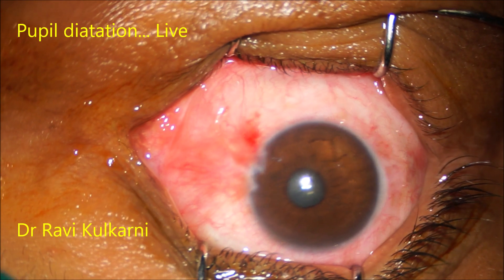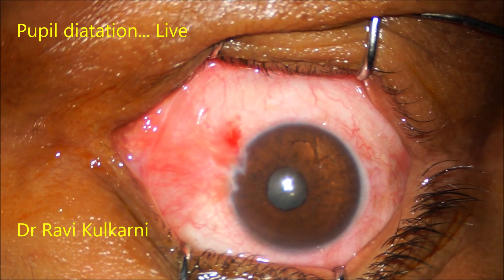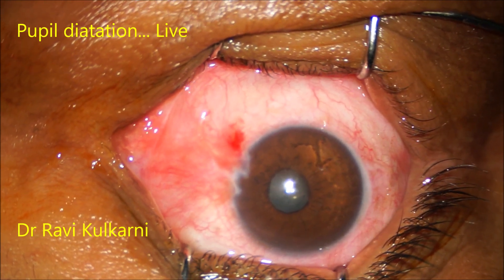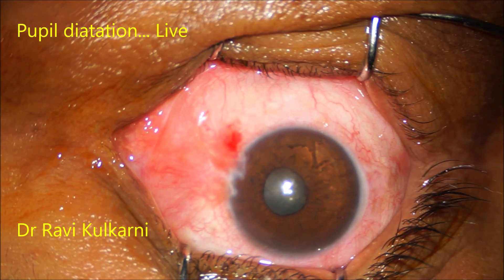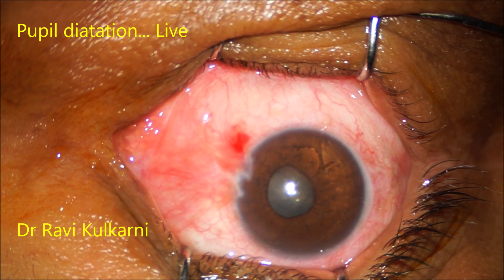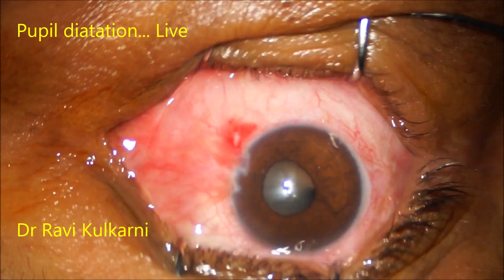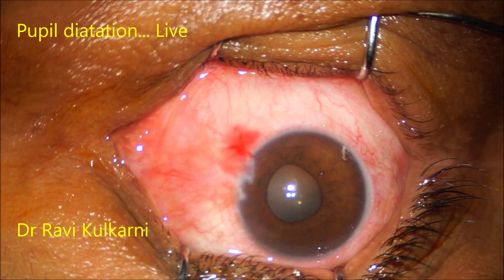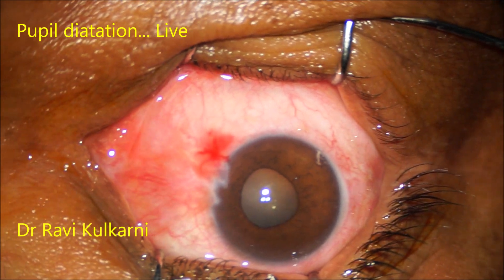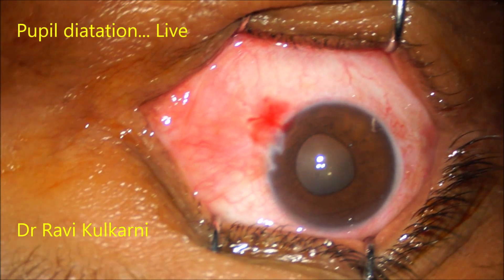Let us see this in normal speed. After injecting the xylocaine with adrenaline, the pupil starts dilating, and in about 10 to 15 seconds, almost 70 to 80% of pupil dilatation is achieved.